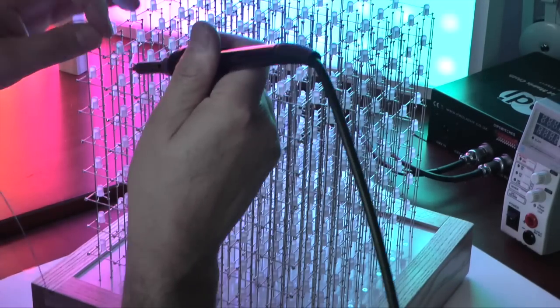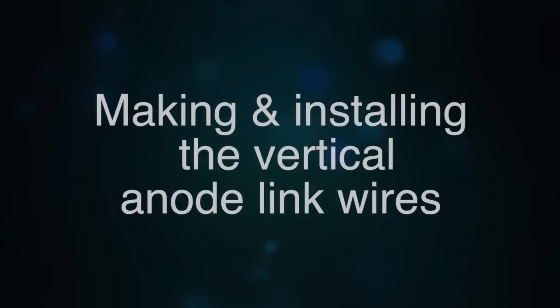That concludes the installation of the horizontal link wires. I now need to make and install the 8 vertical anode link wires. So let's start with the making of them, and this requires another jig.